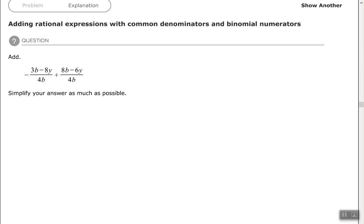We have negative 3b minus 8y all over 4b, plus 8b minus 6y all over 4b. Again, let's rewrite it. We see the negative is out to the side, so we want to put the numerator on the first fraction in parentheses. Since this is plus here, I don't have to put the second numerator in parentheses.